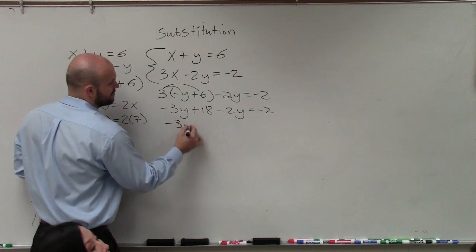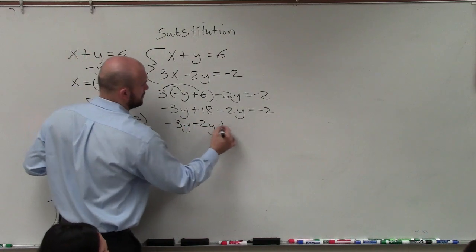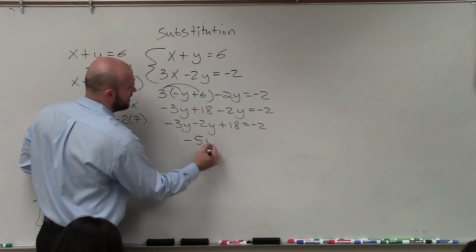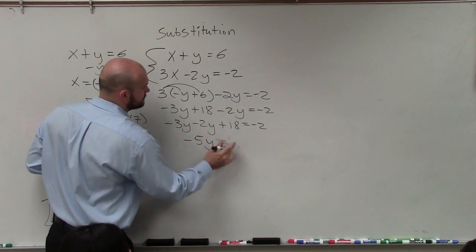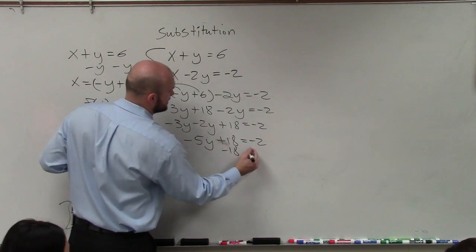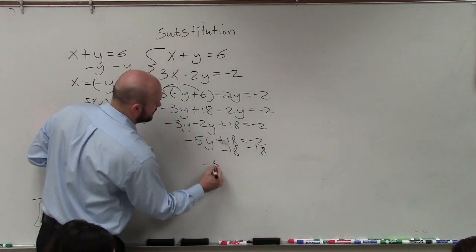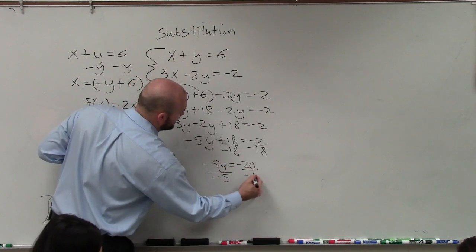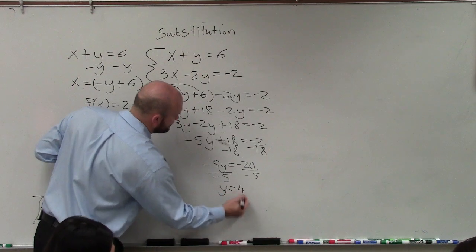I rewrite this so my terms are next to each other. Negative 3y minus 2y is negative 5y plus 18 equals negative 2. Subtract 18. Subtract 18. Negative 5y equals negative 20. Divide by negative 5. Divide by negative 5. Y equals positive 4.